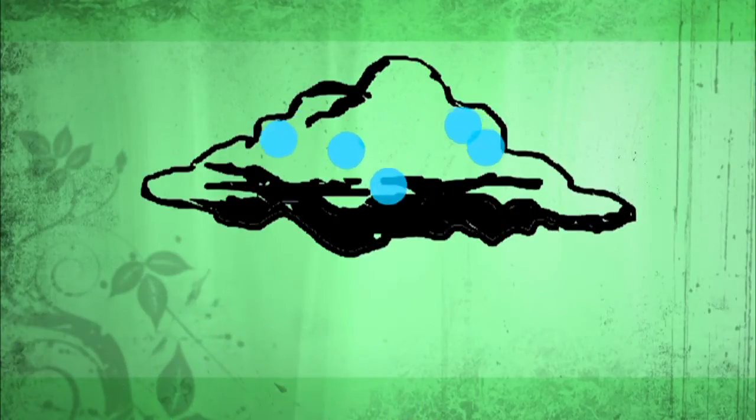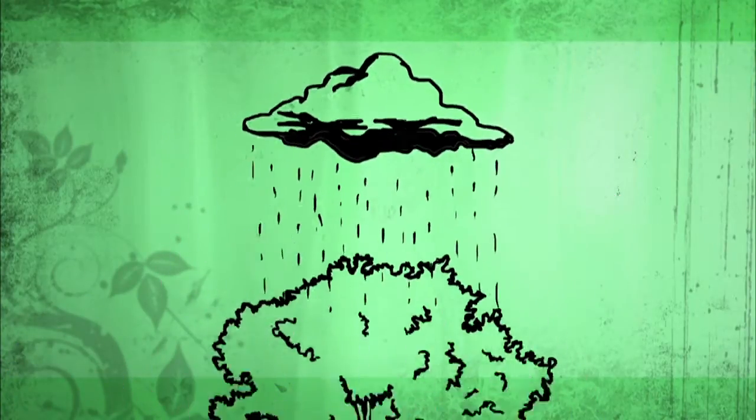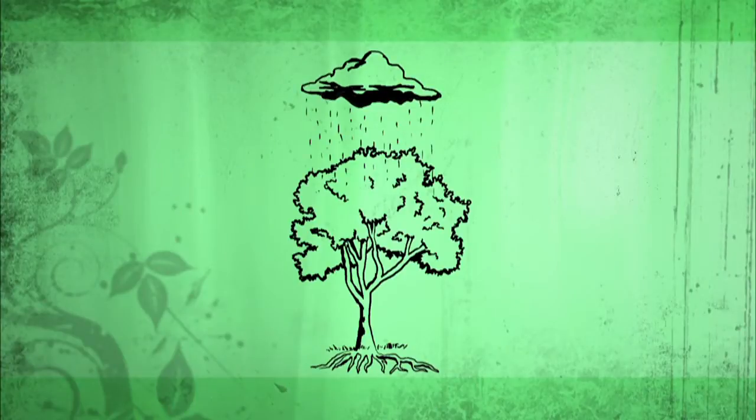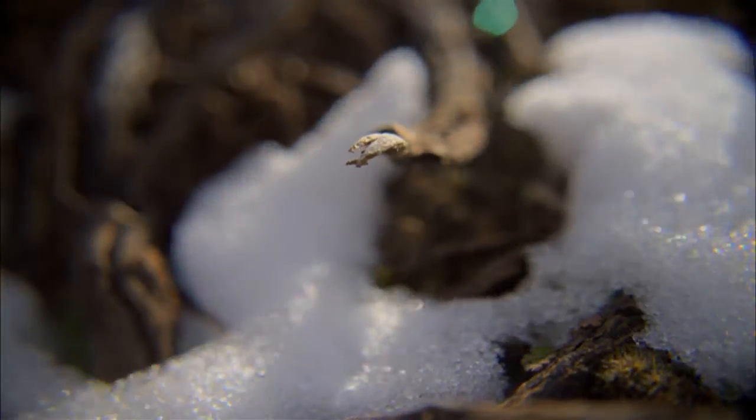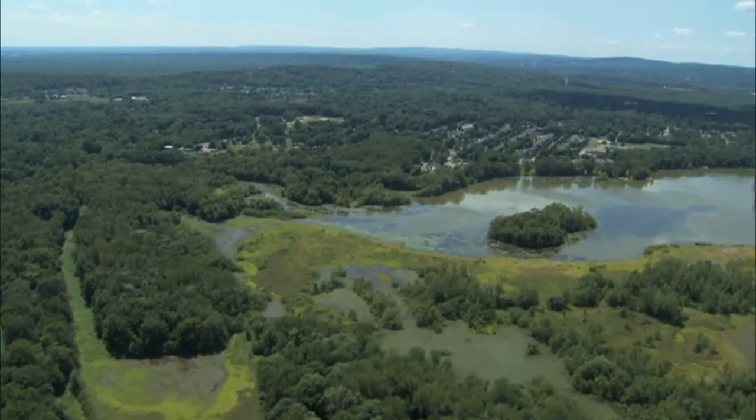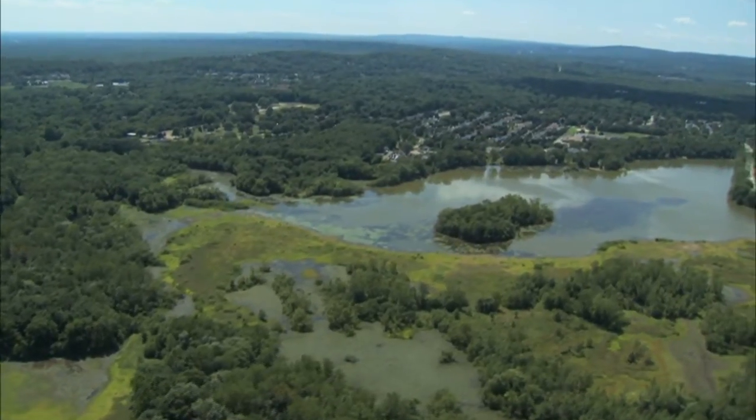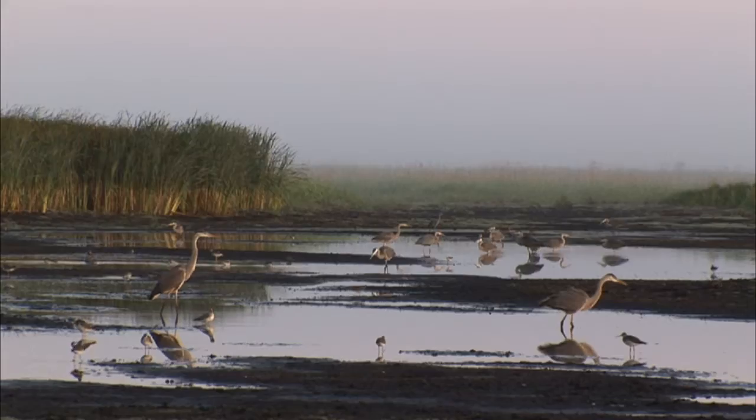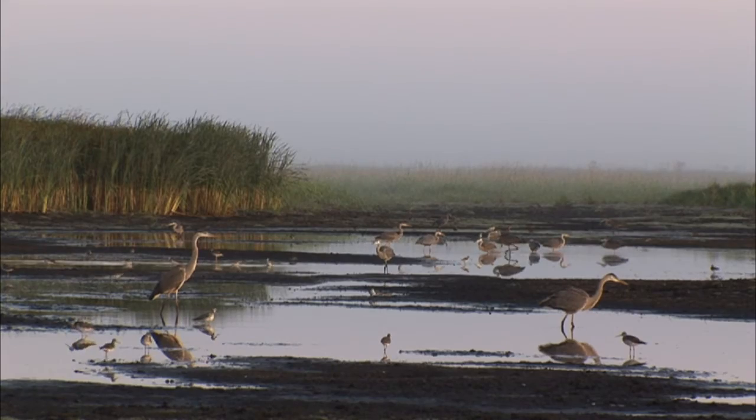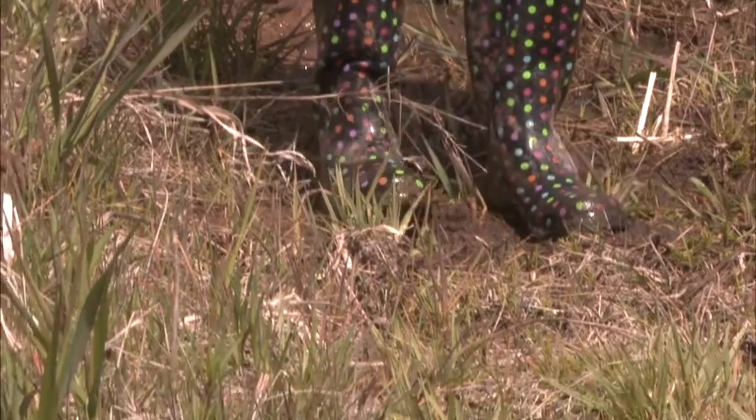This constantly changing water cycle plays a crucial role in creating and maintaining our wetlands. Wetlands can be created from rain or melting snow runoff. They can also be created from rivers flooding or fluctuations in lake water levels. Many wetlands, however, form when groundwater in the soil is at or very near the surface.